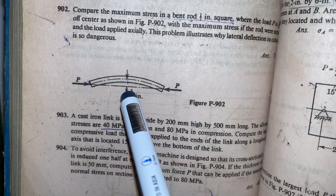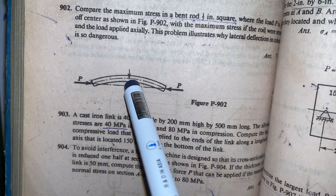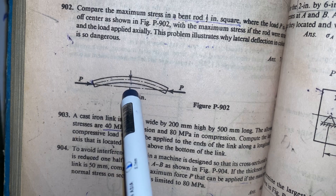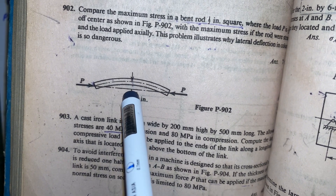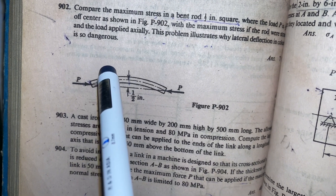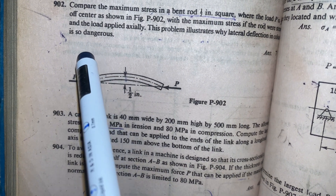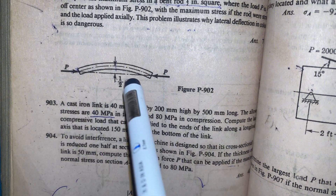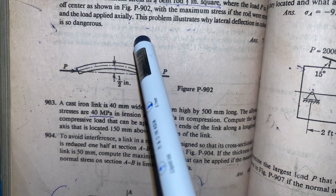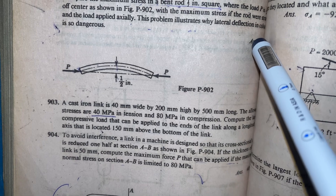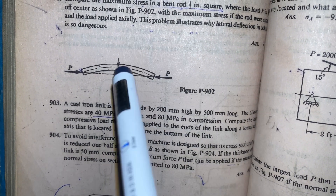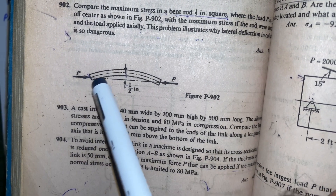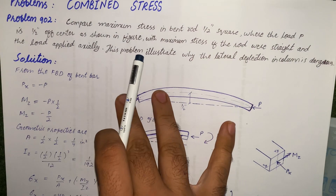This problem illustrates why lateral deflection in a column is so dangerous. We have a column with a half inch lateral deflection, forces are applied at the ends, and the question is to compute the maximum combined stresses in this bent rod and compare it with the straight rod. At the end we will get this point clear by comparing the stresses of the bent rod and the straight rod.